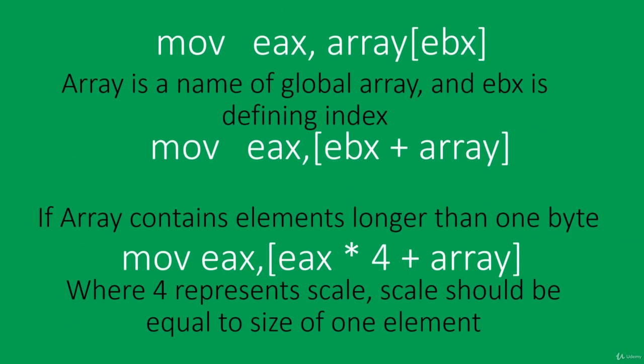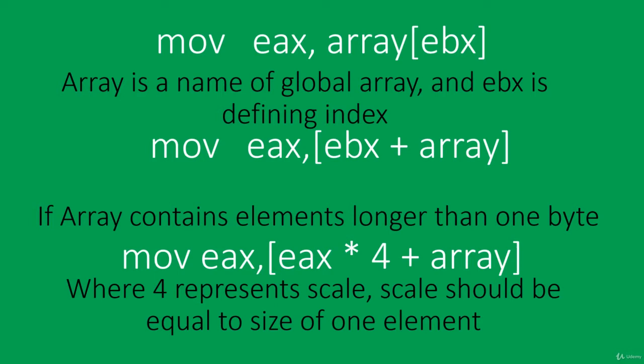If we don't know the exact address — for example when we work with pointers, arrays, or objects — we first calculate the address, store the result into a register, and then we use square brackets with our register inside. This instruction sets eax to the value from the memory space that ebx is pointing to.